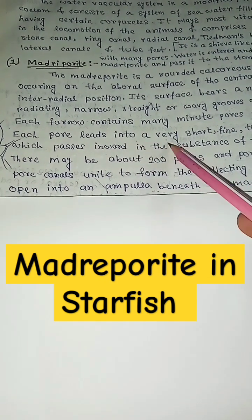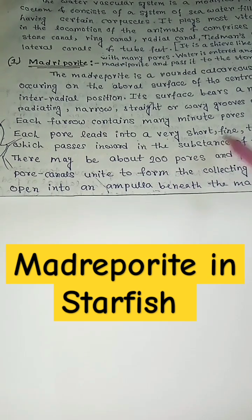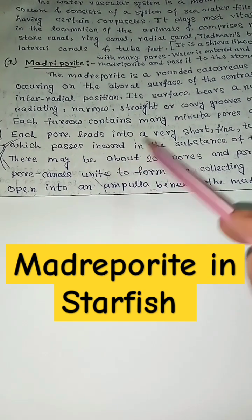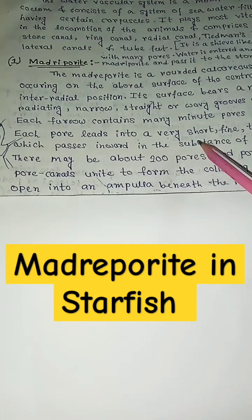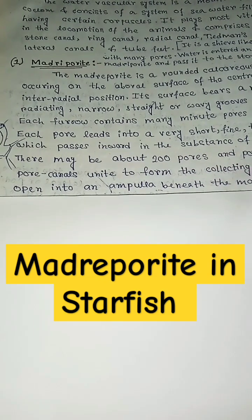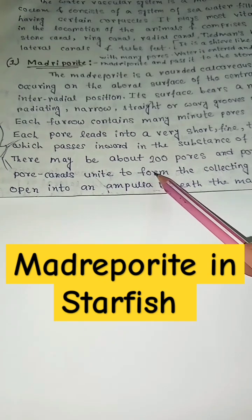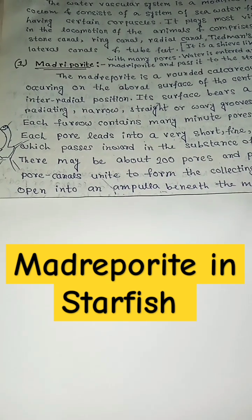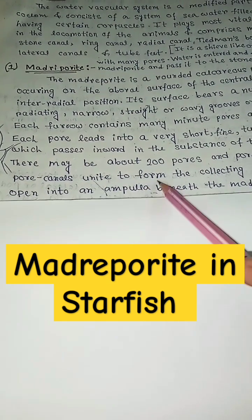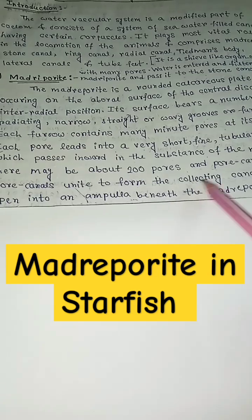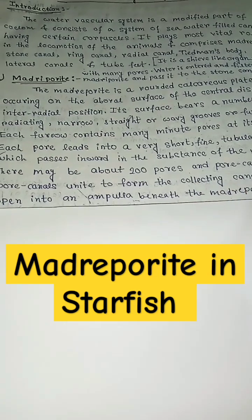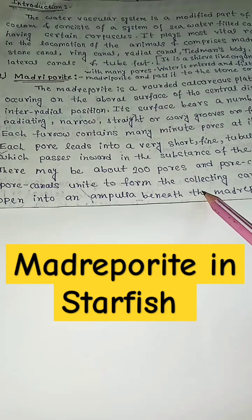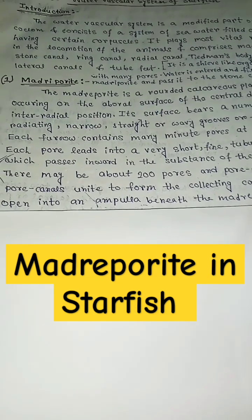Each pore leads into a very short, fine tubular pore canal which passes inward in the substance of the medripodite. There may be about 200 pores and pore canals. The pore canals unite to form the collecting canals which open into an ampulla beneath the medripodite.